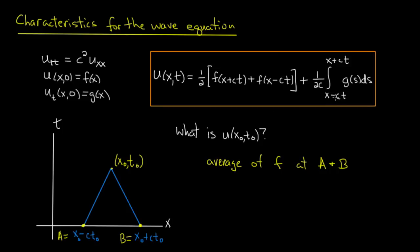What about this g part? Well, we've already pointed out the bounds of integration, x0-ct0 and x0+ct0 in this picture, that's a and b. So this integral is essentially an integral of u from the point a to b, because u is equal to g. So the rest of the data that we need in order to compute the value of u at x0, t0 is just the value of g along this line between a and b.